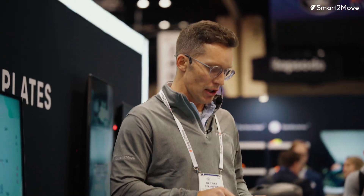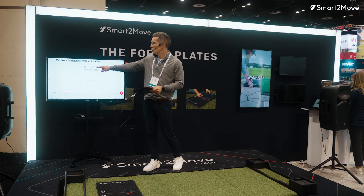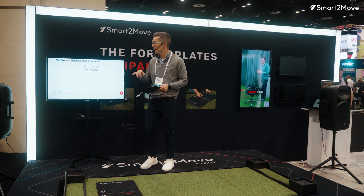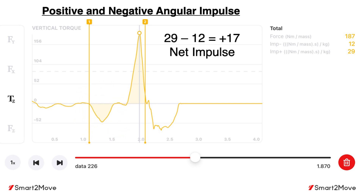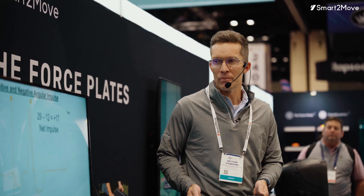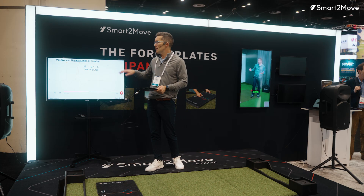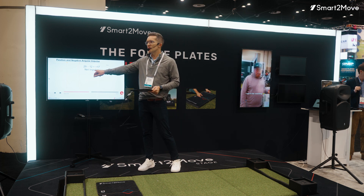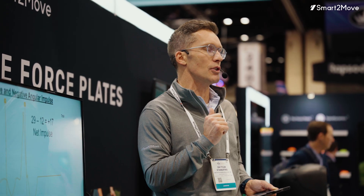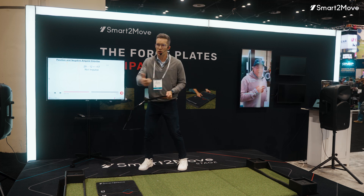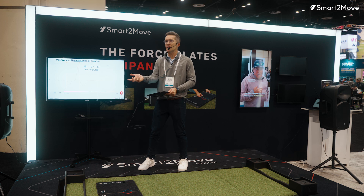Net impulse is really important because when I combine these two together over the same time period, I can understand whether my net impulse is positive — creating a tendency of motion towards the target — or negative — creating a tendency of motion away from the target. I can do the same thing with the torque graph. Anytime the graph is below zero, that signifies a tendency of rotation away from the target; above zero signifies a tendency towards the target.